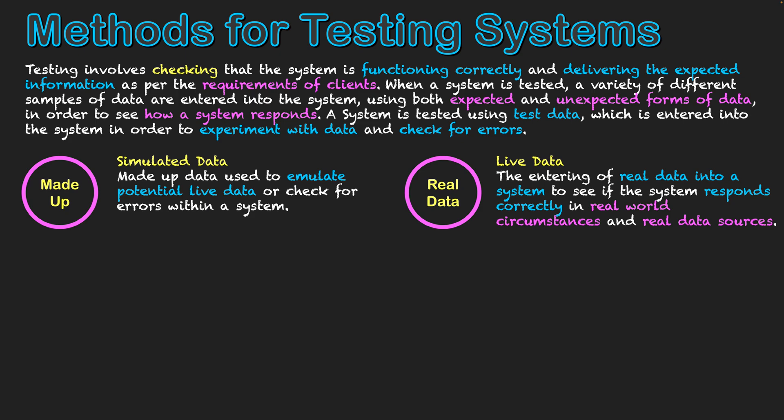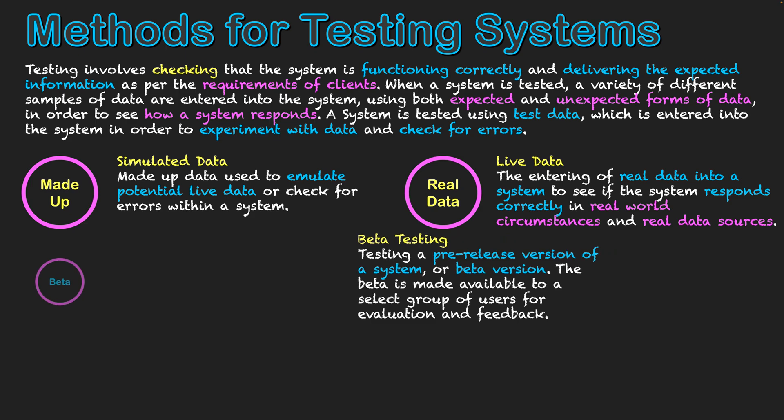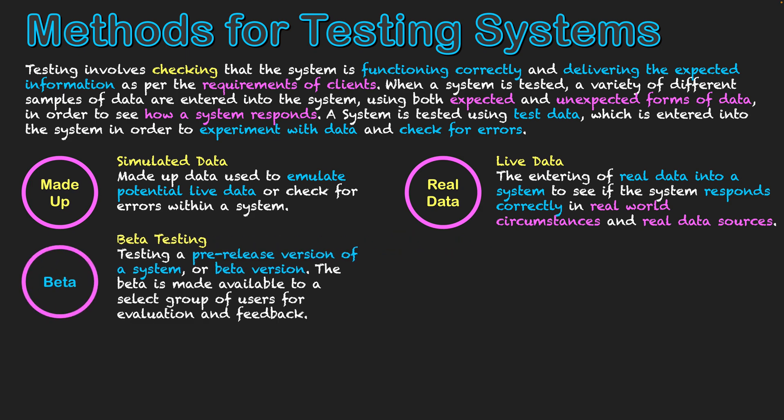Now we'll look at different formats of testing. First is the beta test — testing a pre-release version of a system known as a beta version. You might have seen this with online gaming, where a beta is released to test components of the system, usually online, because you can't test it in a realistic environment within the closed setting of the developers. Real users access it to test the strain put on the system. With beta testing, we want evaluative feedback from users as well as the project team's reflections, so changes can be made before the final solution is published for commercial use.